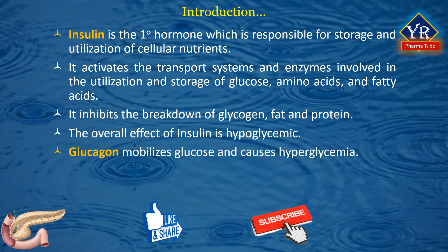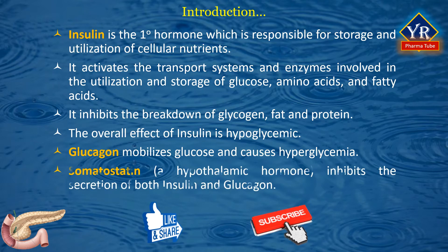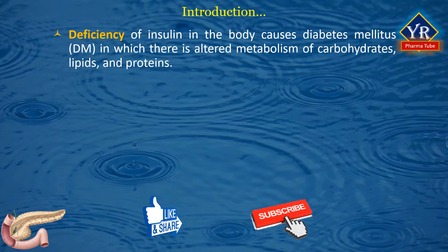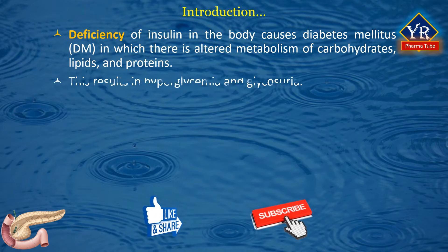The overall effect of insulin is hypoglycemic. The other pancreatic hormone, glucagon, mobilizes glucose from its stores and causes hyperglycemia. The third pancreatic hormone, somatostatin — originally discovered as a hypothalamic hormone — inhibits the secretion of both insulin and glucagon. Deficiency of effective insulin in the body causes a disease called diabetes mellitus, in which there is altered metabolism of carbohydrates, lipids, and proteins, resulting in hyperglycemia and glycosuria.